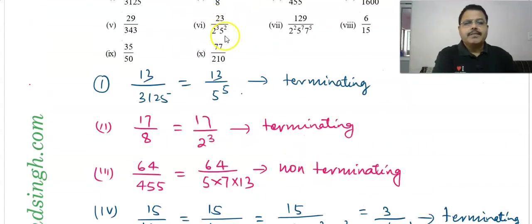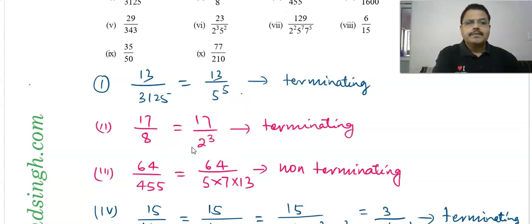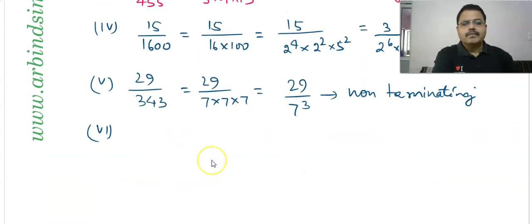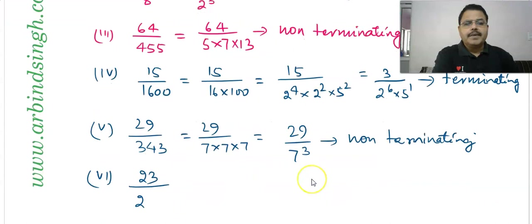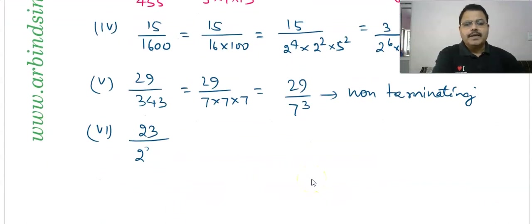Question 6: 23 upon 2³ × 5². The denominator is already in the form 2^m × 5^n, so without any doubt this is a terminating decimal expansion. Question 7: 129 upon 2² × 5⁷ × 7⁵. Since this is in simplest form and the denominator contains a factor of 7 in addition to 2 and 5, it is non-terminating.